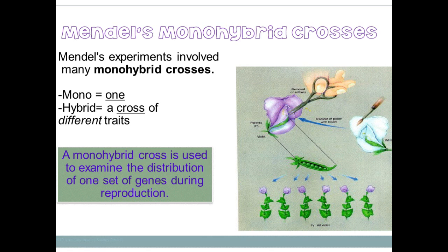Number three, each character of garden peas comes in two clearly different forms. For example, flowers are either purple or white — no other choices. Stems are either long or short. Peas are either smooth or wrinkled. It was very easy for Mendel to see which trait was dominant and which was recessive, and to clearly observe what occurred. That is the main reason he chose peas.